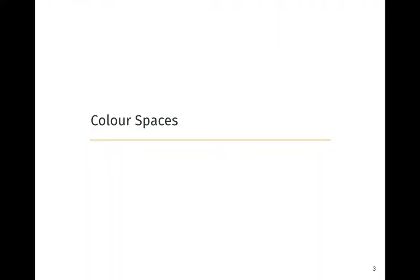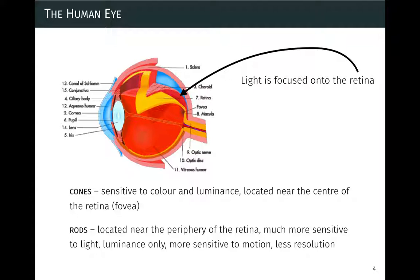We start with color spaces — something you might be aware of but perhaps not the history or detail of it. Starting with the eye in a very hand-wavy, oversimplified way: you have the eye, the lens, and light gets focused on the retina. On the retina you have basically two types of cells that capture light: the cones and the rods.